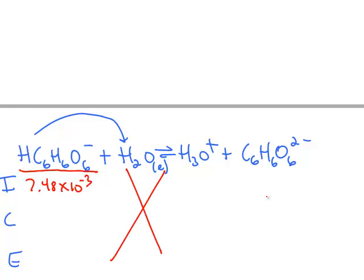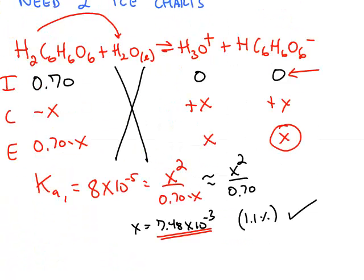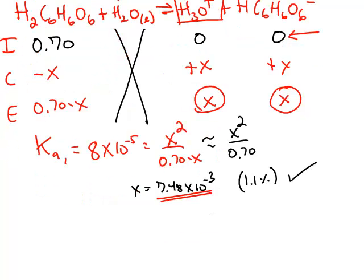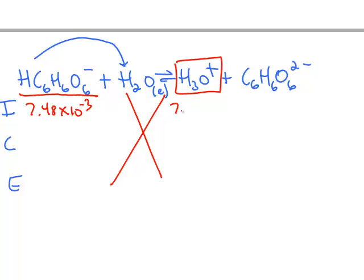H2O liquid we can still cross out. And also notice hydronium was also made from the first ICE chart. And that was also x. So this starting number is also 7.48 times 10 to the negative 3rd.